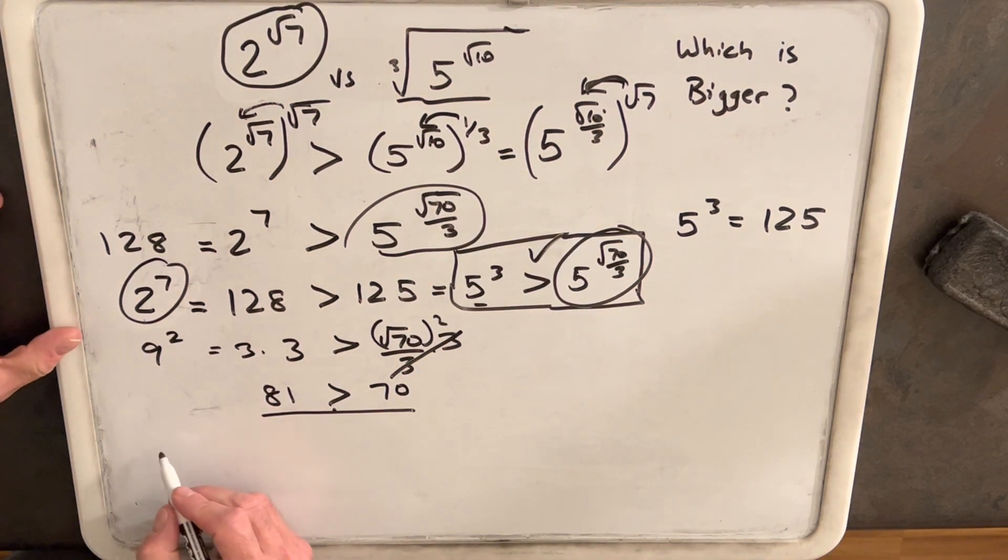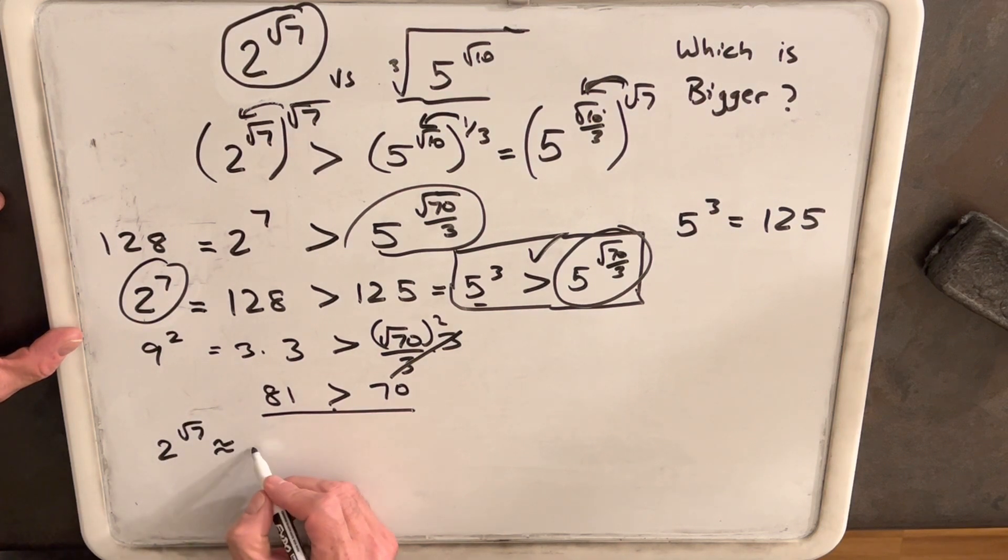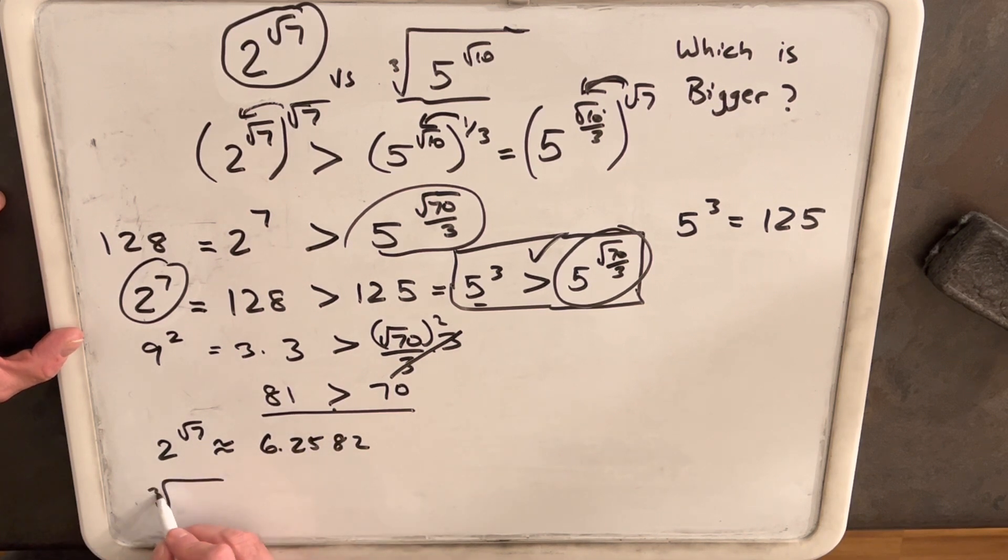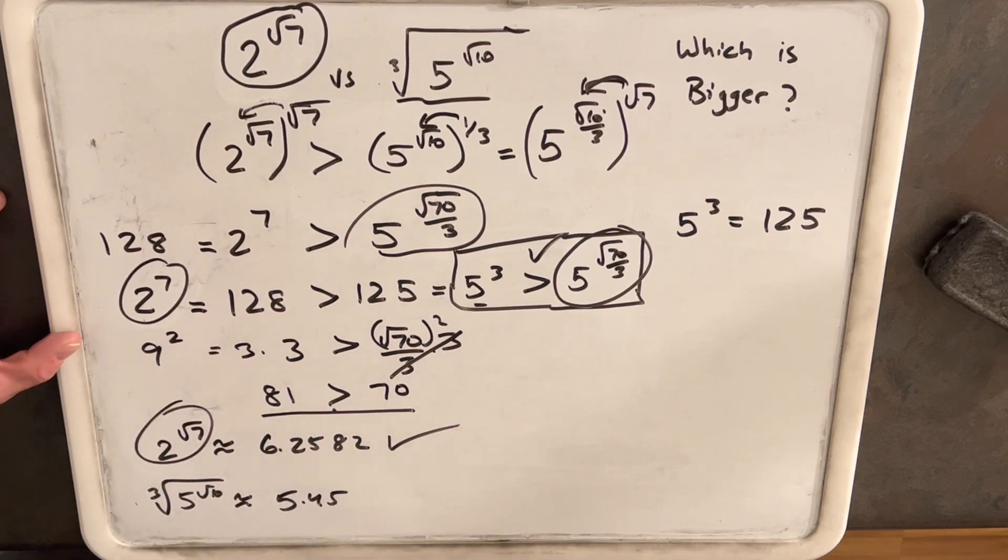And just to check our work, I used the calculator before I recorded that video and found that 2 square root of 7th is about 6.2582. And the cube root of 5 to the square root of 10 is somewhere about 5.45. So that just verifies our work. So that's correct.